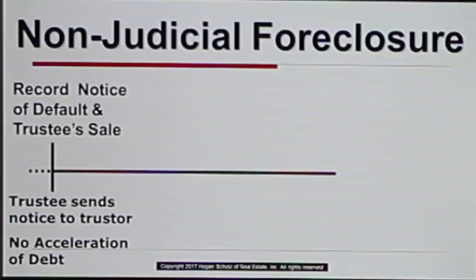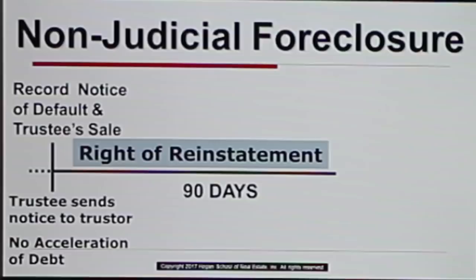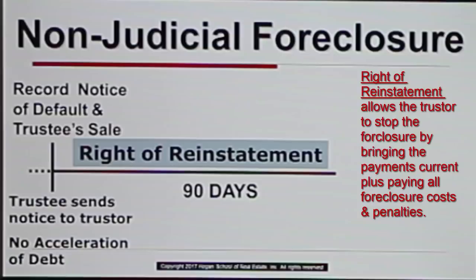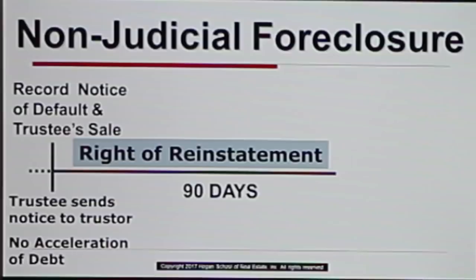There's no acceleration of the debt in a non-judicial foreclosure of a deed of trust. Instead, the law says the trustor — the borrower — has at least 90 days during which to reinstate themselves and the property. The right of reinstatement means they have the right to bring the payments current plus pay foreclosure costs and any penalties — instead of having to pay the whole loan off. On the 91st day, the trustee's sale — the public auction — could be held.